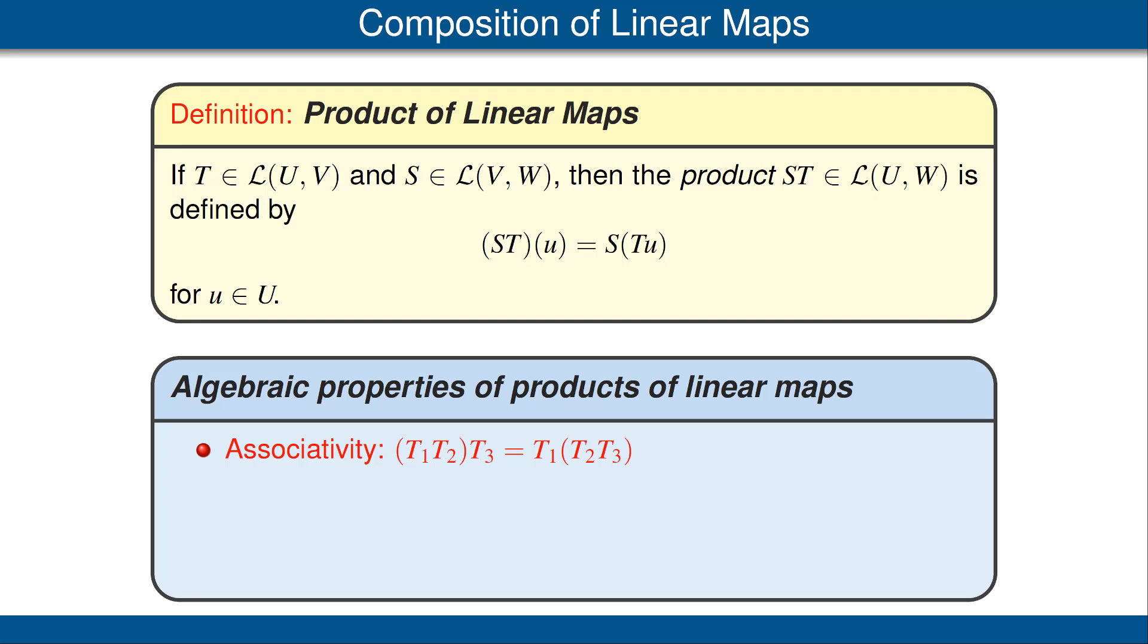Here are the key algebraic properties of products of linear maps. First, we have associativity, which means grouping does not matter and we can ignore parentheses. This involves three linear maps. We haven't stated here explicitly, but this equation is valid only if the ranges and domains are such that these compositions make sense. Our second property is the identity: T times I is equal to I times T is equal to T. Recall that I denotes the identity map. However, the two I's here are not necessarily the same. Let's assume that T is a linear map from U to V. Then the I in the left-hand equation is the identity from U to U, whereas the I in the center equation is the identity map from V to V.